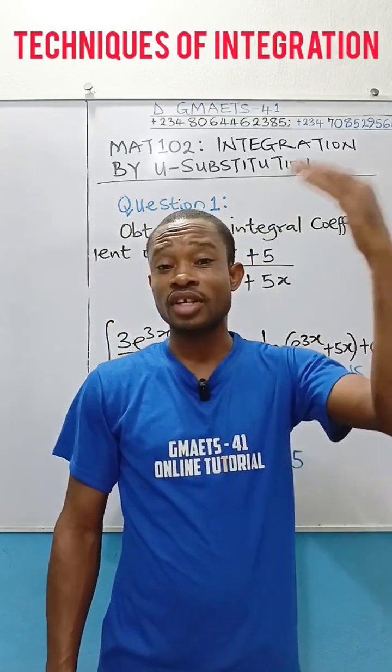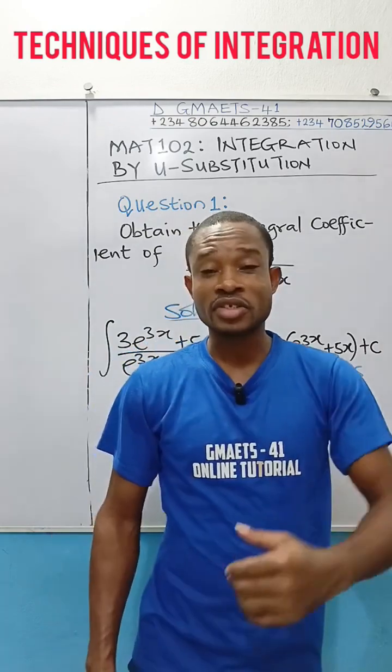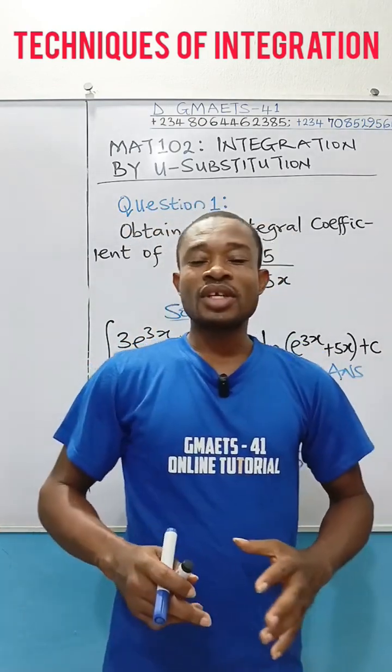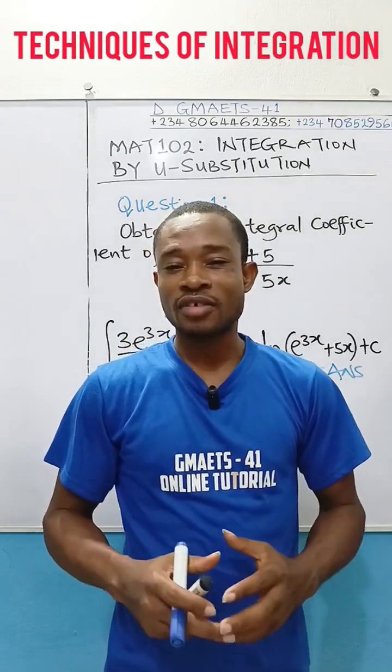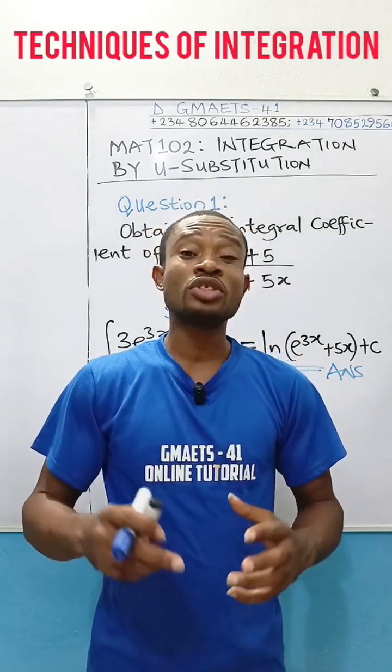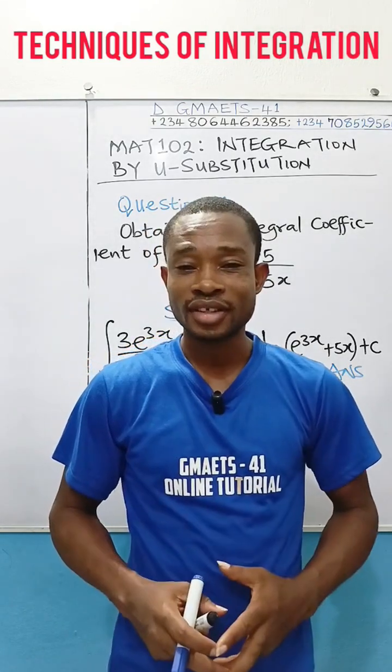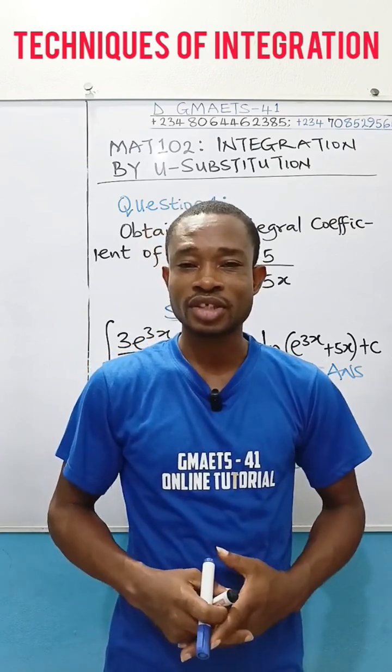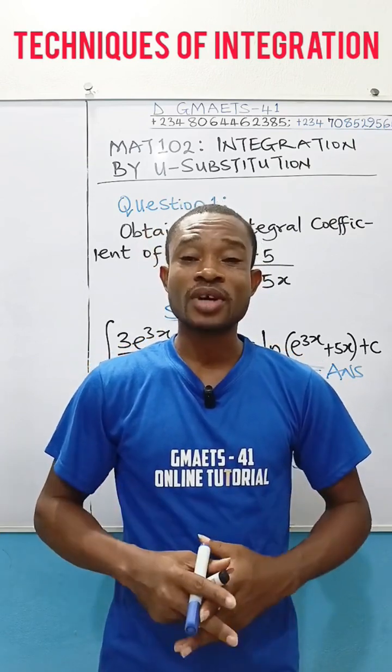Differentiate the down; if it gives you the top, then the answer of that integral is ln of the denominator. GMATS41 has got 15 sets of questions that I want to show you how to attack with a super shortcut, especially when you find yourself in CBT examination. These are u-substitution problems.